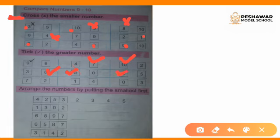7 and 2: 7 is larger than 2, so we will tick on the 7. Then 1 and 4: 4 is larger than 1, so we will tick on the 4. And 0 and 3: 3 is larger than 0, so we will tick on the 3.